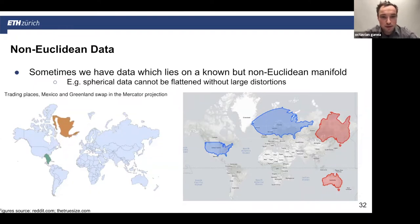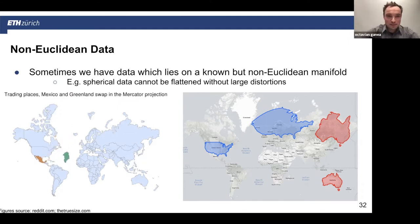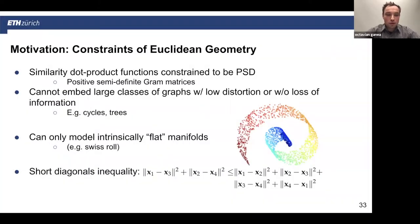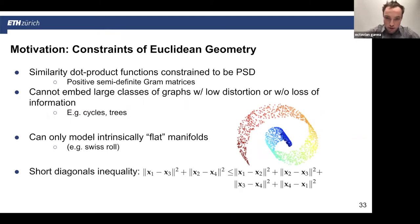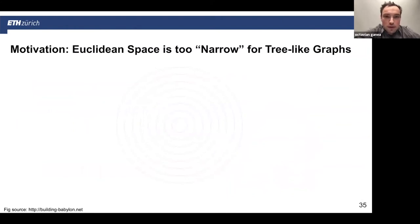The Schoenberg-type inequalities are very useful for proving distortions in Euclidean space, including distortions for cycles and trees. This leads to a fundamental limit: we can only learn what we can represent. This motivates why Euclidean spaces are too narrow for tree-like or hierarchical structures.